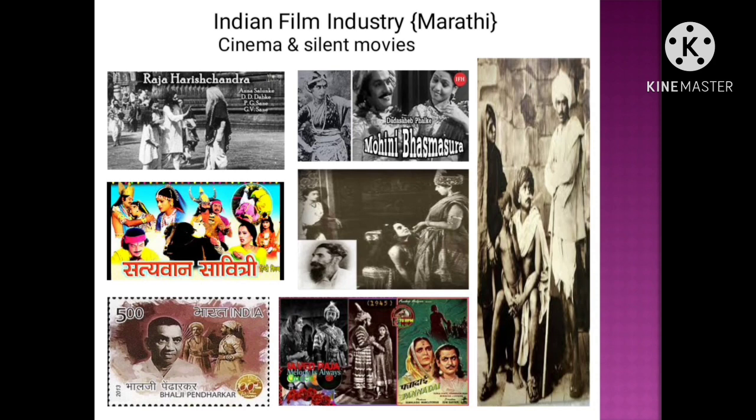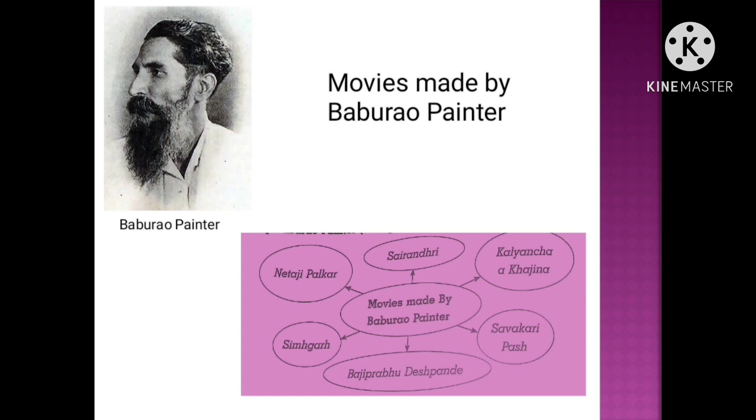Dadasaheb Phalke directed the full-length movie Raja Harishchandra, produced entirely in India and released in Mumbai in 1913. He also made silent movies like Mohini Bhasmasur and Savitri Satyavan. He also made documentaries on the rock-cut caves of Verul and pilgrim centers of Nashik and Trambakeshwar. Anand Rao Painter was the first person to make a cine camera of Indian make.